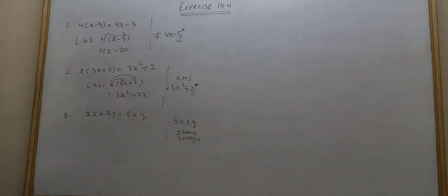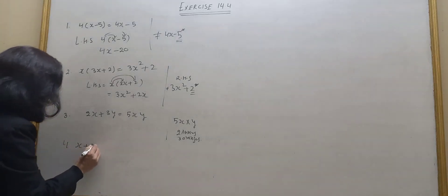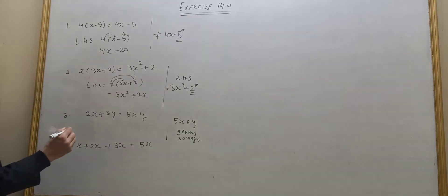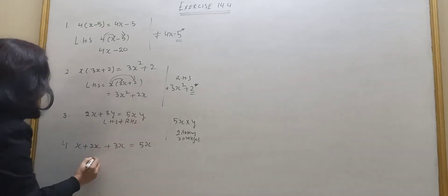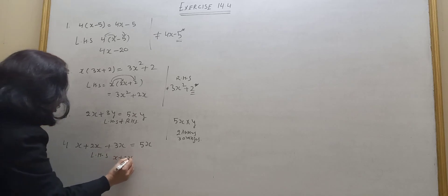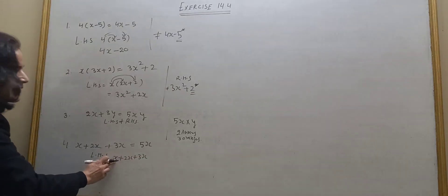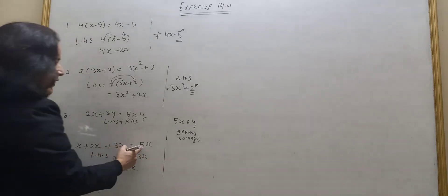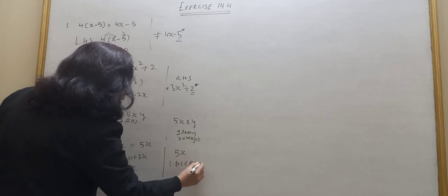Then: x plus 2x plus 3x is equal to 5x. Left hand side: x plus 2x plus 3x. Think of it like 3 apples plus 2 apples is 5 apples plus 1 more apple is 6 apples. So it is 6x. But right hand side is 5x, so left hand side is not equal to right hand side.